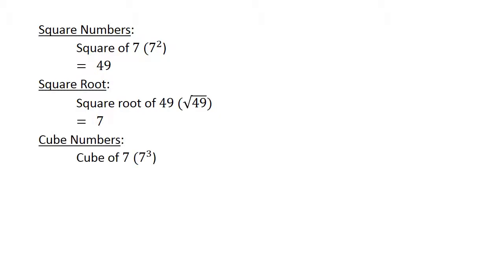The cube of 7 equals 7 × 7 × 7 equals 343. And the cube root of 343 equals 7.